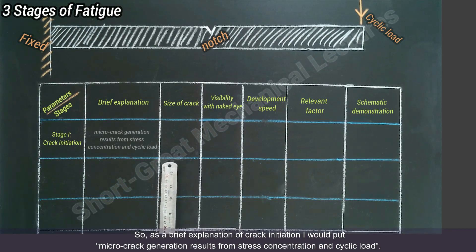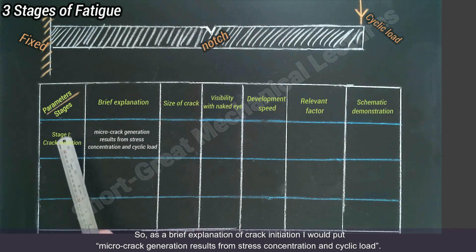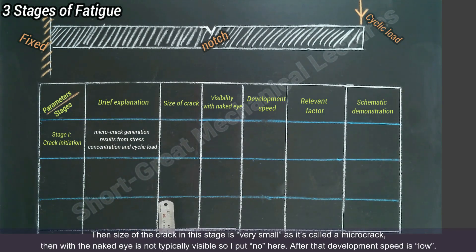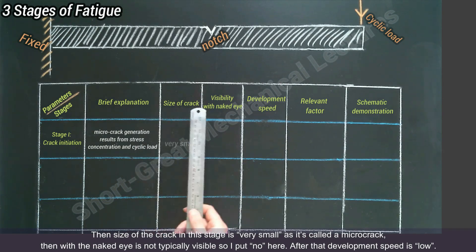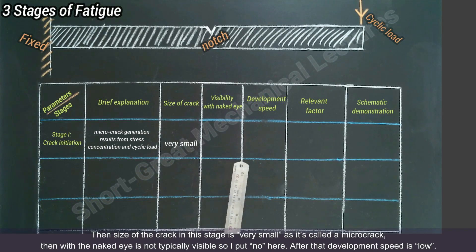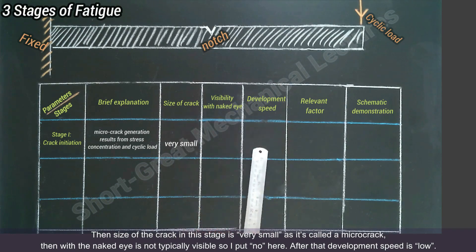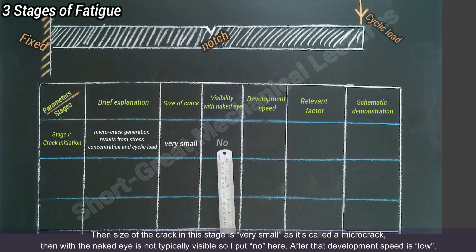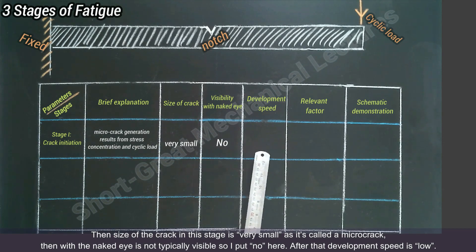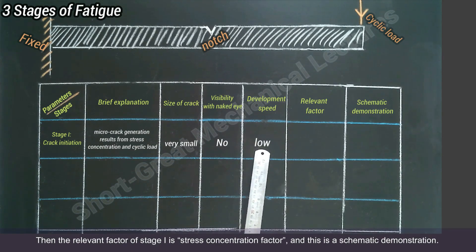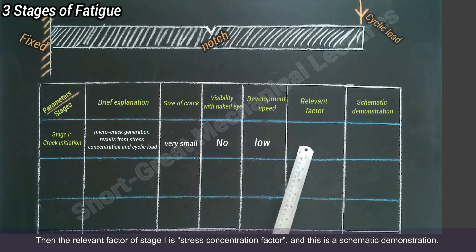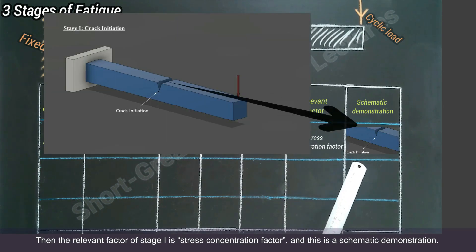As a brief explanation of crack initiation: micro crack generation results from stress concentration and cyclic load. The size of the crack in this stage is very small — it's called a micro crack — and it is not typically visible with the naked eye. The development speed is low, and the relevant factor for this stage is the stress concentration factor. Here is a schematic demonstration.